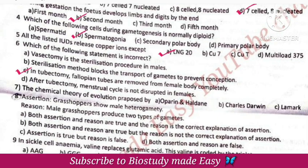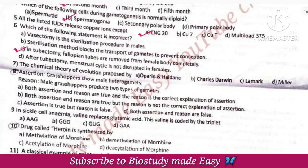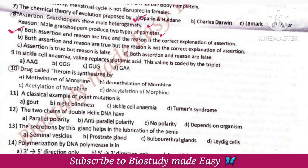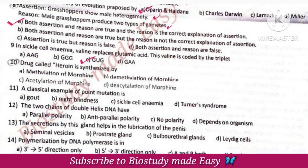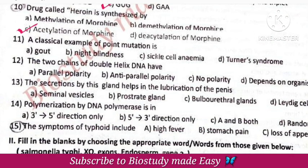Sixth one answer: option C. Seventh one answer: Operin and Halden, option A. Eighth one — the correct option for the assertion and reason is option A; both assertion and reason are true. Ninth one answer: option C, GUG. Tenth one answer: option C, acetylation of morphine.